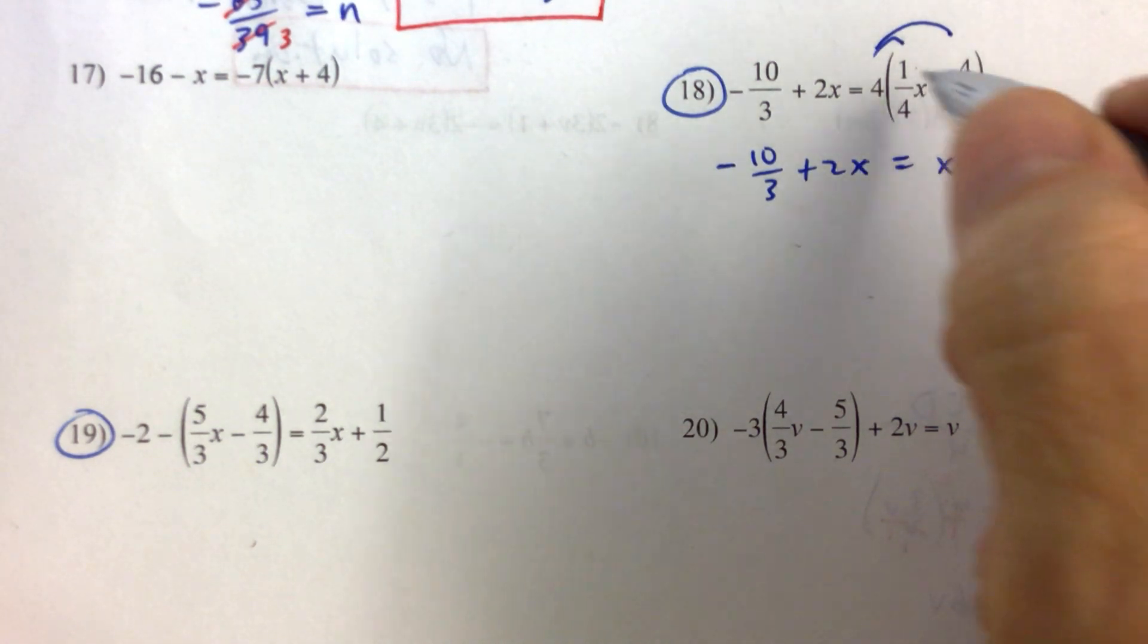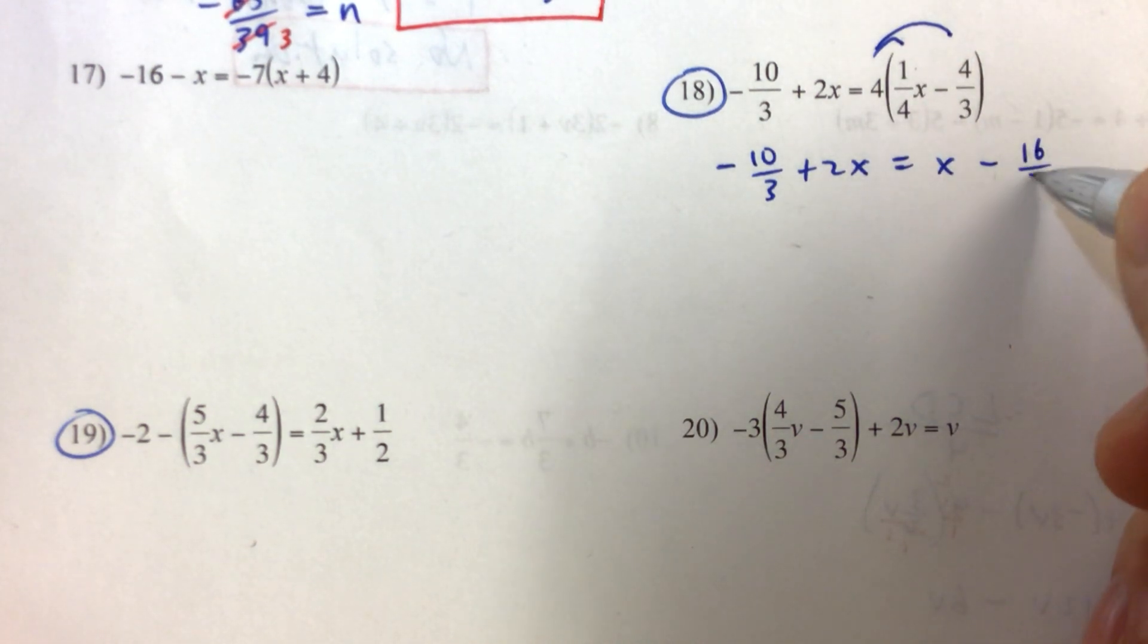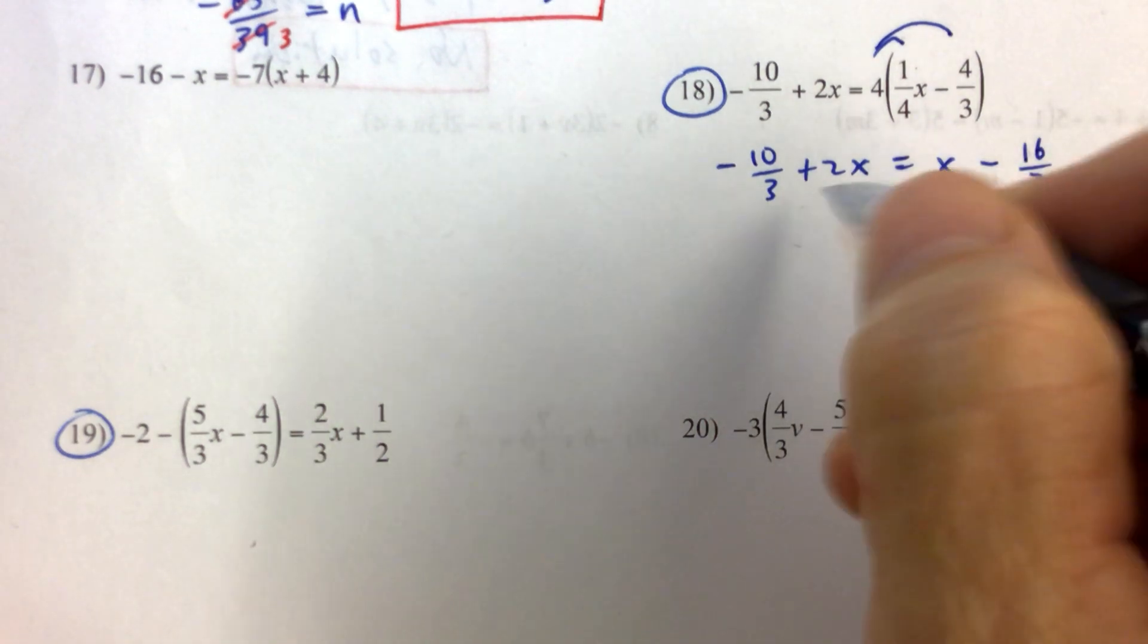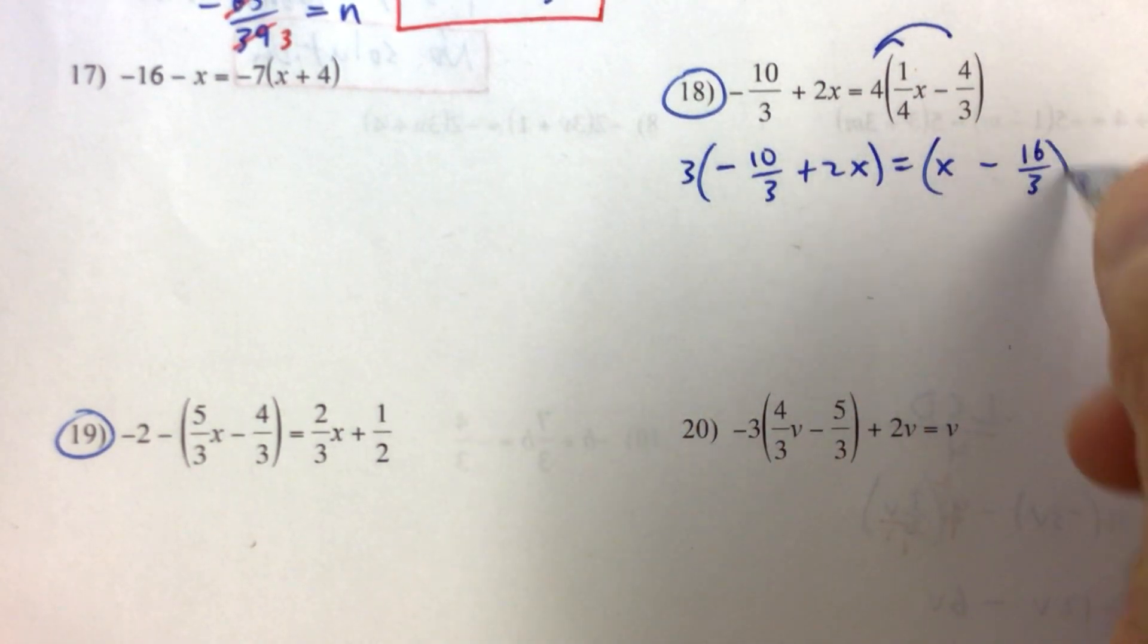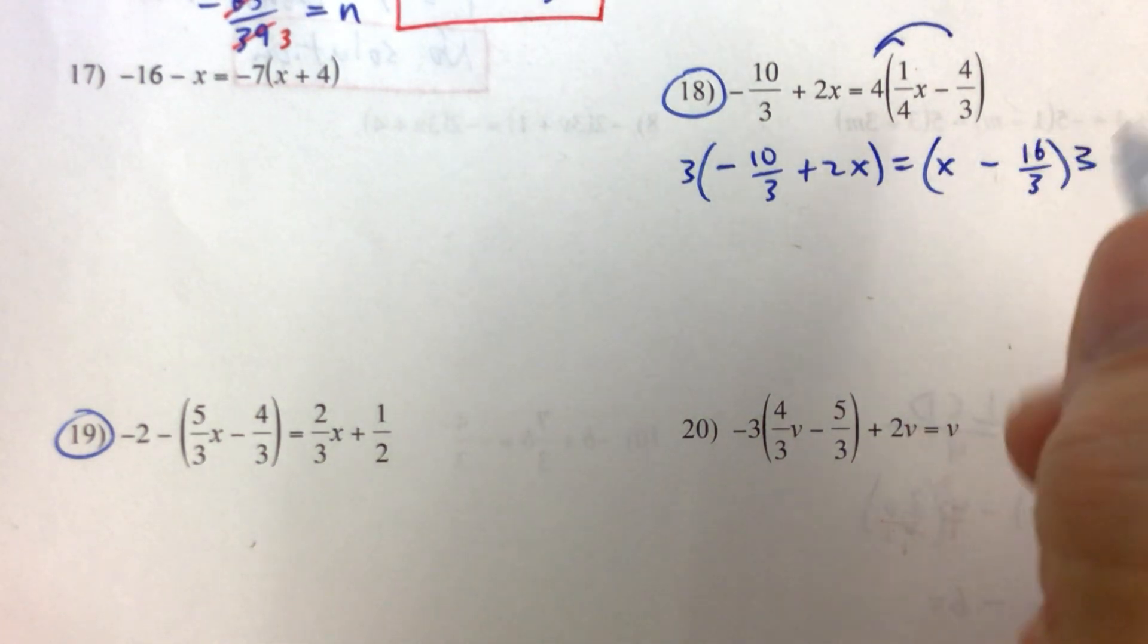But if we distribute the 4 and multiply the 4 times 1/4 x, we just get x. And then we have minus 4 times 4/3 would be 16/3. Now I like that because our lowest common denominator is our only denominator in both sides, and that's 3. So we're just going to multiply both sides by 3. I think that's probably a simpler way to do this problem.